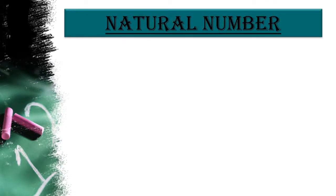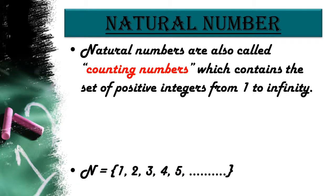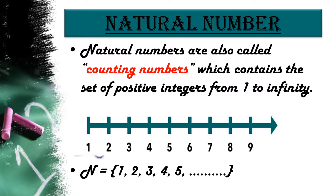The first type of number is natural numbers, also called counting numbers. These are the numbers 1, 2, 3, and so on — which contain the set of positive integers from 1 to infinity. The set of natural numbers can be written as N = {1, 2, 3, 4, 5, ...}. On the number line, natural numbers start from 1 and go to infinity.